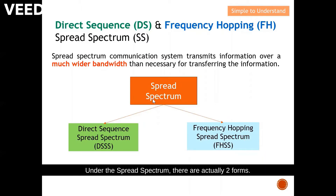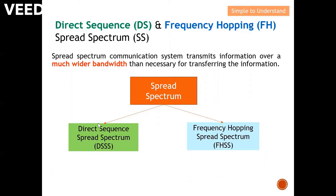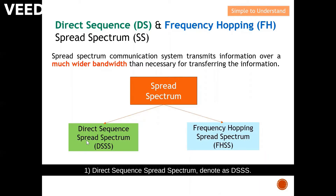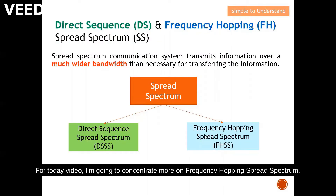Under spread spectrum there are actually two forms. One is direct sequence spread spectrum, denoted as DSSS. Another one is frequency hopping spread spectrum, denoted as FHSS. For today's video I'm going to concentrate more on frequency hopping spread spectrum.